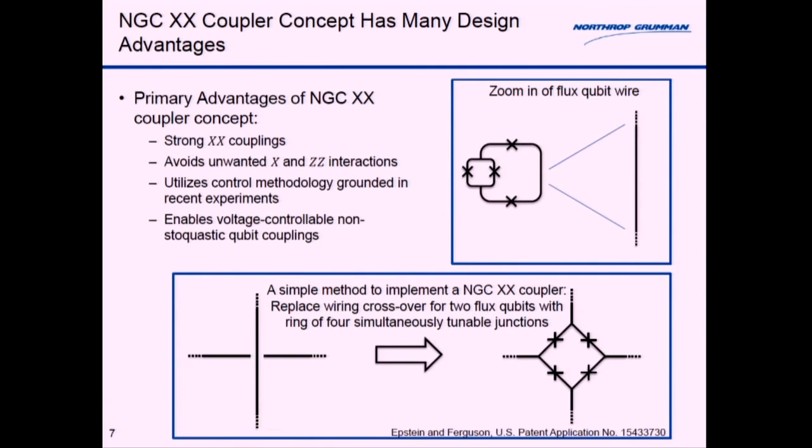Simply you replace this crossover with a four-junction ring where you make all of these junctions flux tunable and simultaneously flux tunable. Then by raising and lowering the effective critical current of these junctions you can turn on and off an XX coupling.